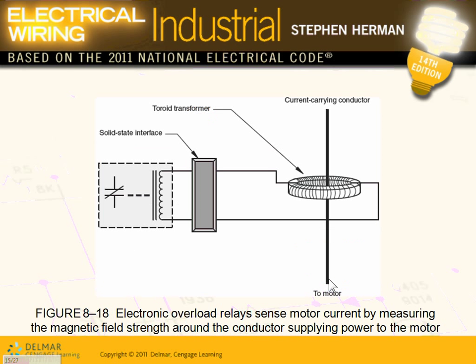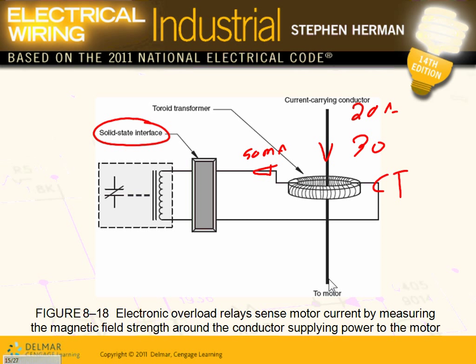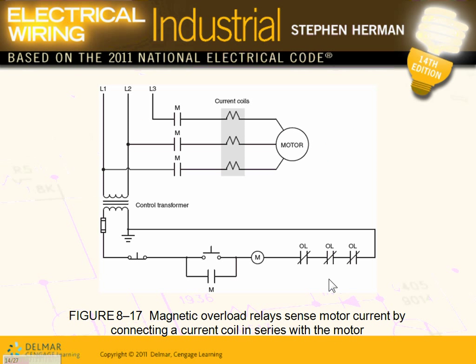That's your magnetic overload. The second one is electronic: I'm supposed to get 20 amps, it moves to 30 amps. When you hit 30 amps, the CT — current transformer — picks it up and converts it to, say, 50 milliamps. That signal goes into an electronic solid-state device, which analyzes it and makes a decision to open the contact that controls the flow of power to the control circuit of the motor.